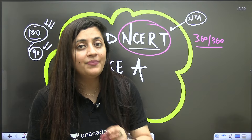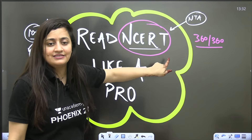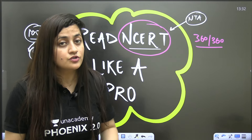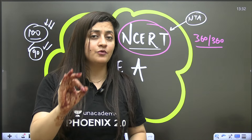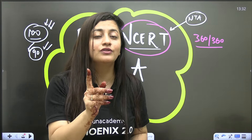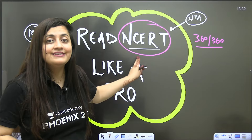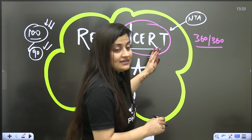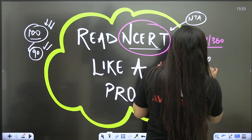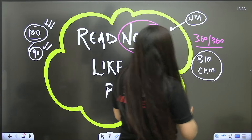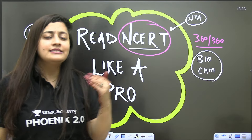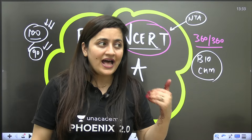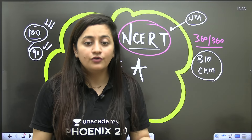Out of 100 biology questions in the NEET paper, 90 to 95 will come from NCERT — that's what you need to keep in mind. NCERT is the game changer for all of you. And it's not just for biology — for chemistry also you need NCERT. For physics, there are some theoretical questions that come directly from NCERT, but for physics you should have concept clarity first, practice questions, then focus on NCERT.